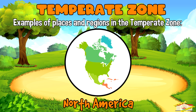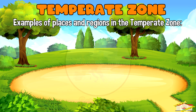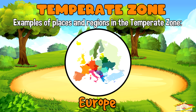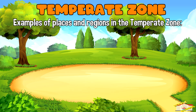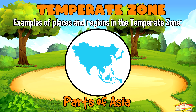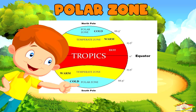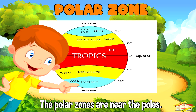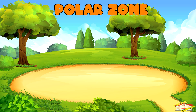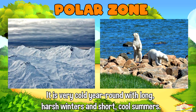Examples of places and regions in the temperate zone are North America, Europe, and parts of Asia. The polar zones are near the poles. It is very cold year-round with long harsh winters and short cool summers.